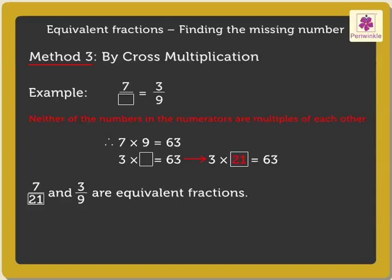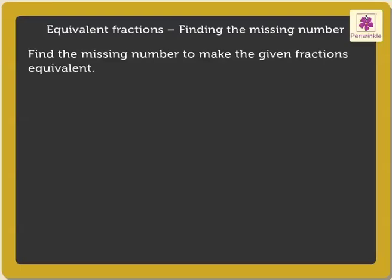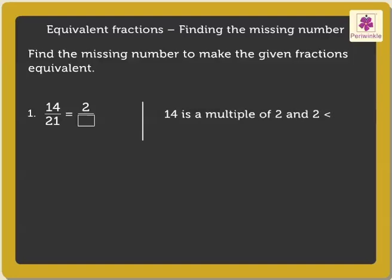Now let us solve some more examples. Find the missing number to make the given fractions equivalent. Look at the first one. Here, we will use the division method, as 14 is a multiple of 2 and 2 is less than 14. So, on dividing the numerator and denominator by 7, we get the missing number, that is, 3.